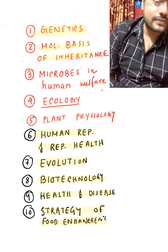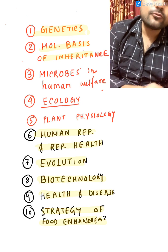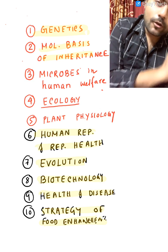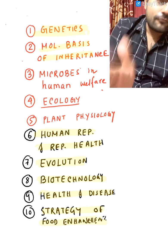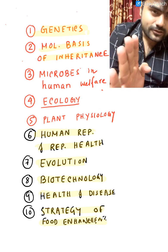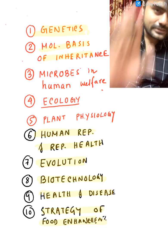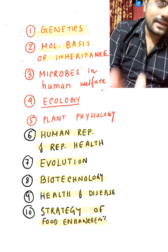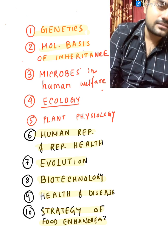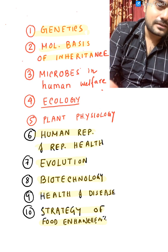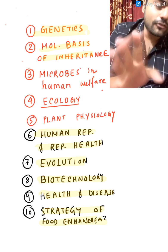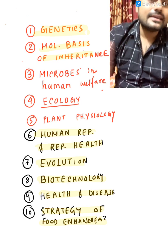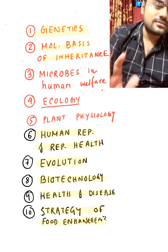The last chapter — you have to know strategies and food. It is a small chapter again, and you have to know every line about it. If you read these 10 chapters, you will get at least 55 to 65 questions out of 90 from these topics.